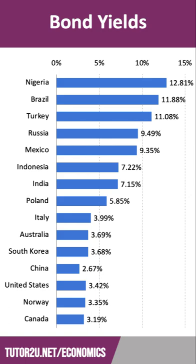With Nigeria, for example — a country with high inflation, a country with a volatile currency — the profits you might make by buying Nigerian government bonds might be literally eradicated, taken away by a fall in the currency or high inflation, or perhaps even the default risk from the Nigerian government. In contrast, countries such as Norway and Canada and the United States can borrow more cheaply for 10 years at just over 3%.